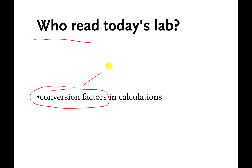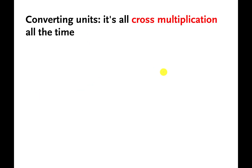For example, if I told you something was 16 inches long and I wanted to know what that measurement was in different units, like centimeters, that's what this lab is about. The way that I do conversions is by cross multiplying. I would give you a piece of information — I'd say there are 2.54 centimeters per inch.